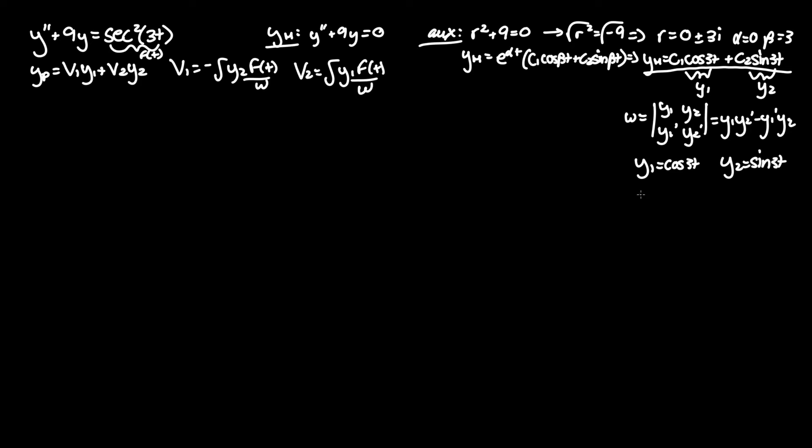So we just got to take some derivatives. Y1 prime is negative 3 sine of 3t, and y2 prime equals 3 cosine of 3t. Make sure to bring the coefficient of the t term out to the front every time you take a derivative.